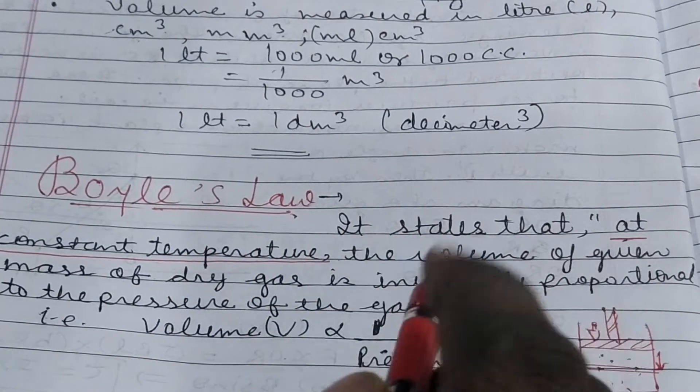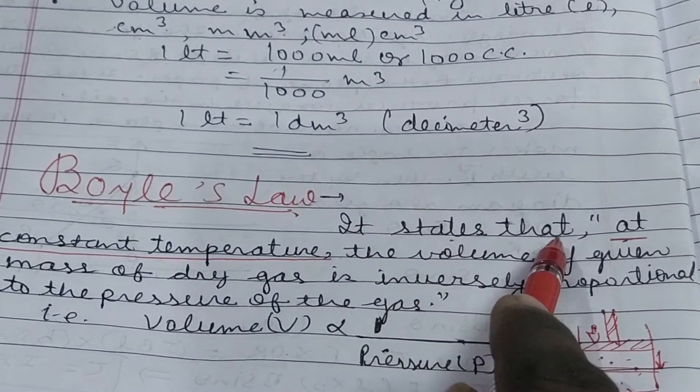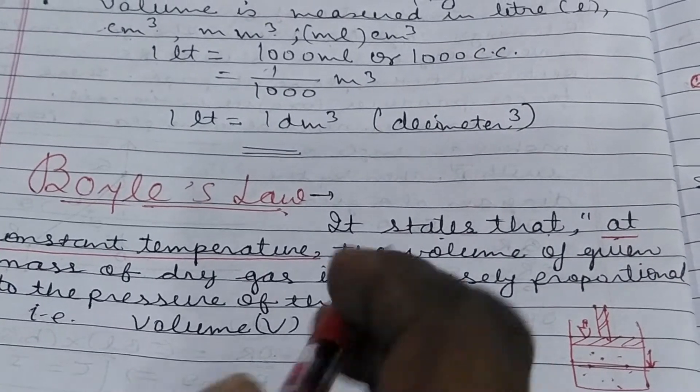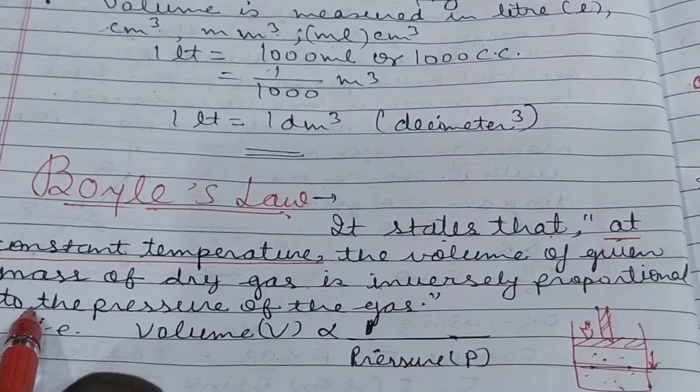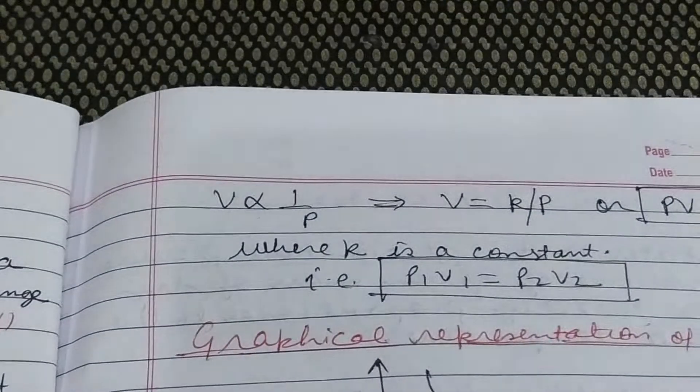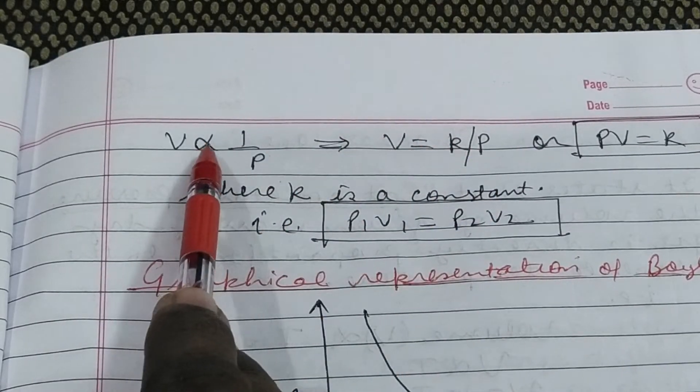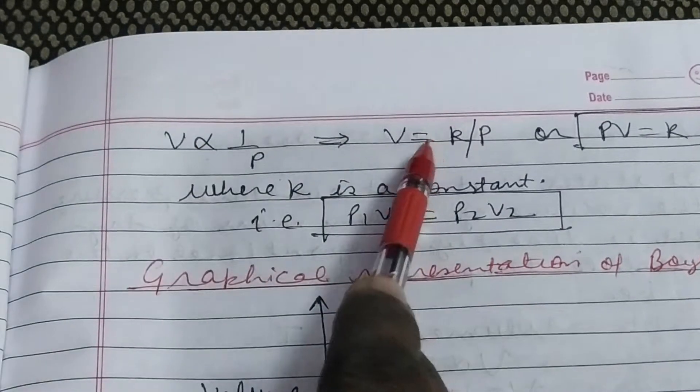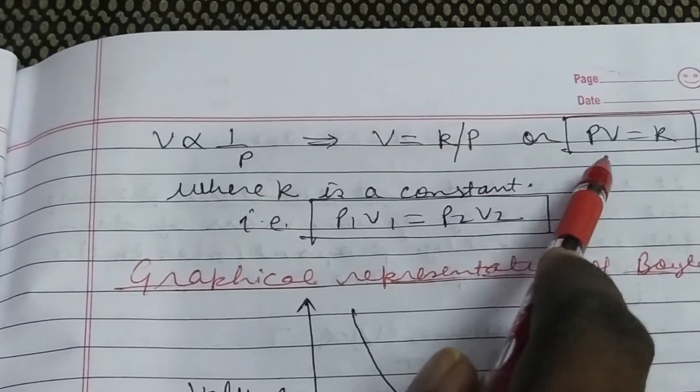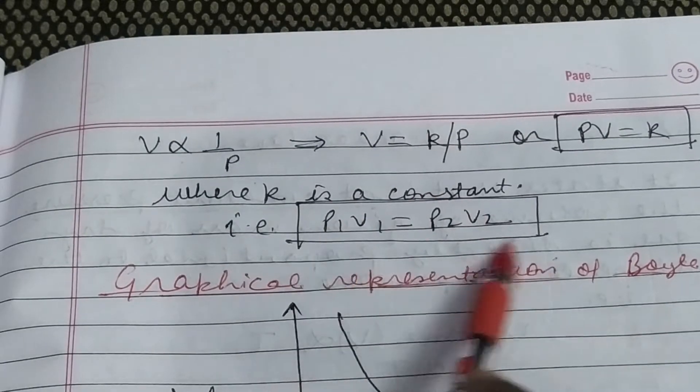According to Boyle's law, the statement is written word to word as given by the scientist. It states: at constant temperature, the volume of given mass of dry gas is inversely proportional to pressure. V inversely proportional to P, or V equals K upon P, or PV equals K. This means P1V1 equals P2V2, which you apply in numerical problems.